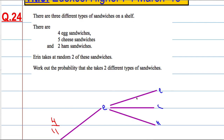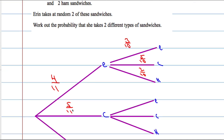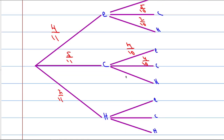Now if you're going to pick again, there won't be 11 sandwiches anymore, there will be 10. So on the second go, suppose you got egg the first time — the chances of getting egg again: there are only three egg sandwiches left out of 10. But there's still 5 cheese out of 10, or 2 ham out of 10. If we picked cheese already, next time there will only be 4 cheese, but still 4 egg and 2 ham. If I pick the ham sandwich first, there's only 1 ham left out of 10, but still 5 cheese out of 10 and 4 egg out of 10.